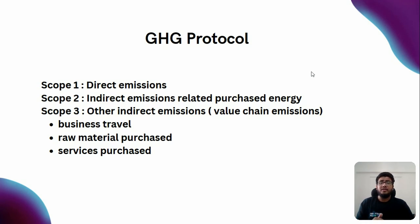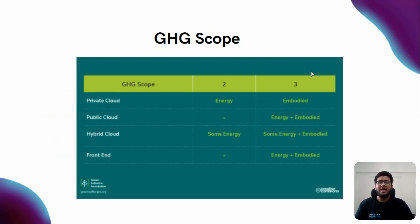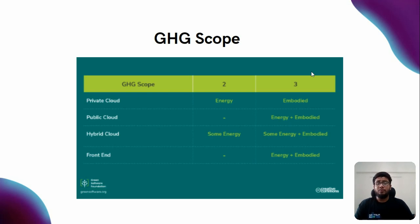Let's see how the GHG scopes are classified in the DevOps context. If we store anything in a private cloud, it comes under Scope 2 and Scope 3. When we deploy anything in a public cloud, it comes under Scope 3. When we deploy in a hybrid cloud, it comes under Scope 1 and Scope 3. Similarly, if we deploy on-premises, it comes under Scope 3. You can understand how carbon footprint maps to where we deploy — private cloud, public cloud, or hybrid cloud. You can visit the Green Software Foundation for more details.